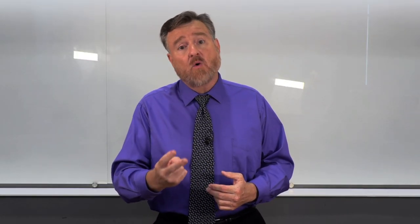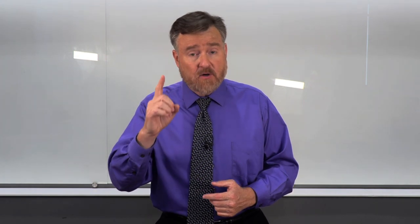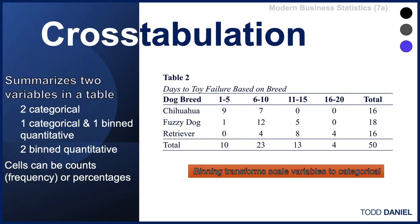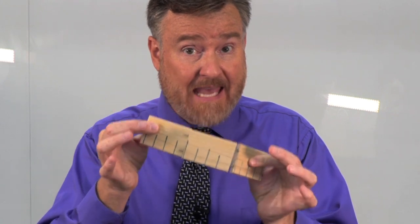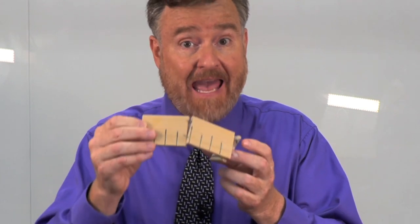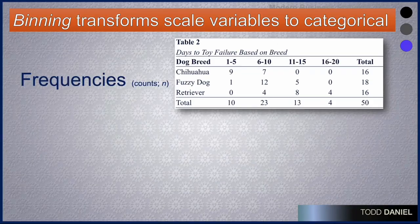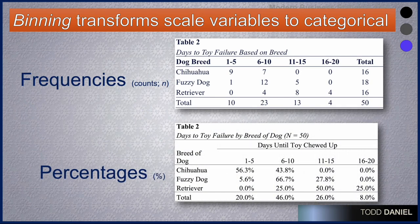We can summarize two categorical variables in a cross tabulation table, as in sound heard and dress color seen. Or we could cross tabulate a categorical variable like dog breed with a binned quantitative variable. Or we could cross tabulate two binned quantitative variables — putting days to failure in columns and number of toys owned also binned in the rows. Binned quantitative data takes scale data and breaks it into categories, and those categories are what go into our table. The cells within this table can be counts shown as frequencies or as percentages.